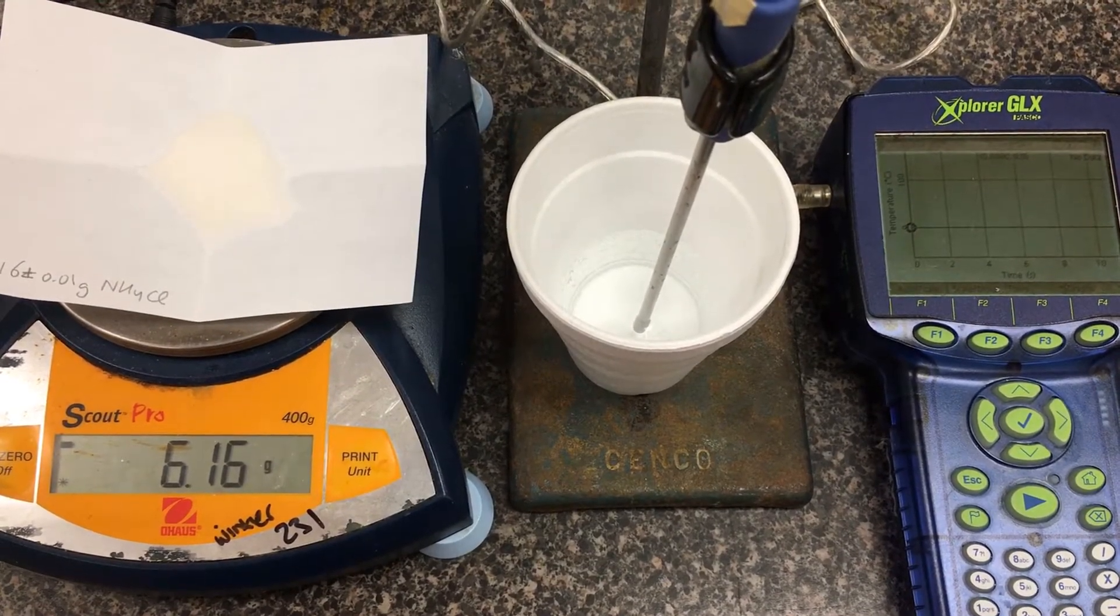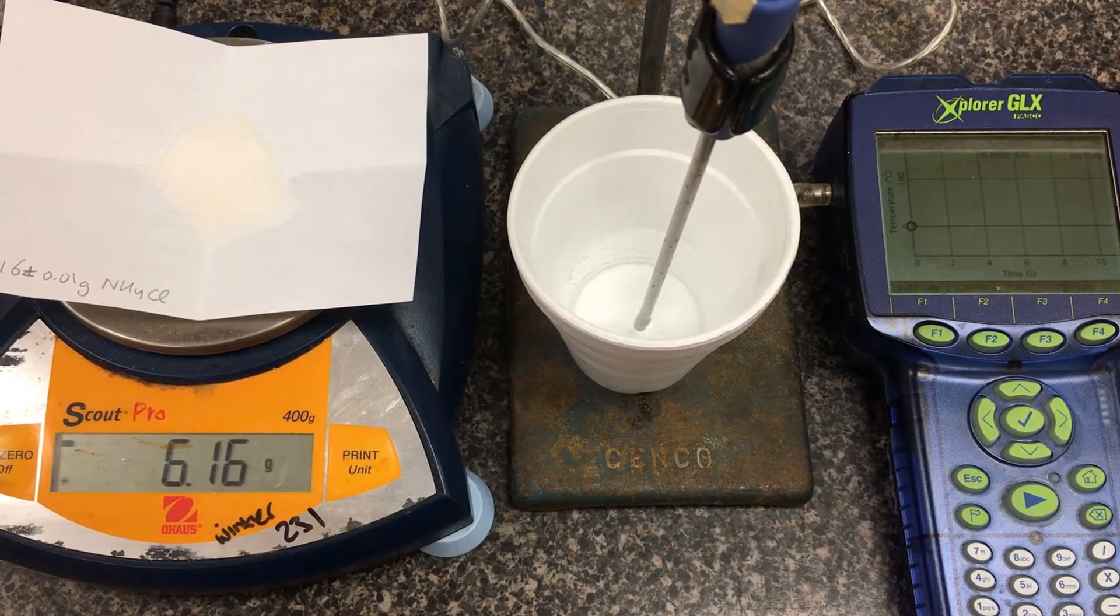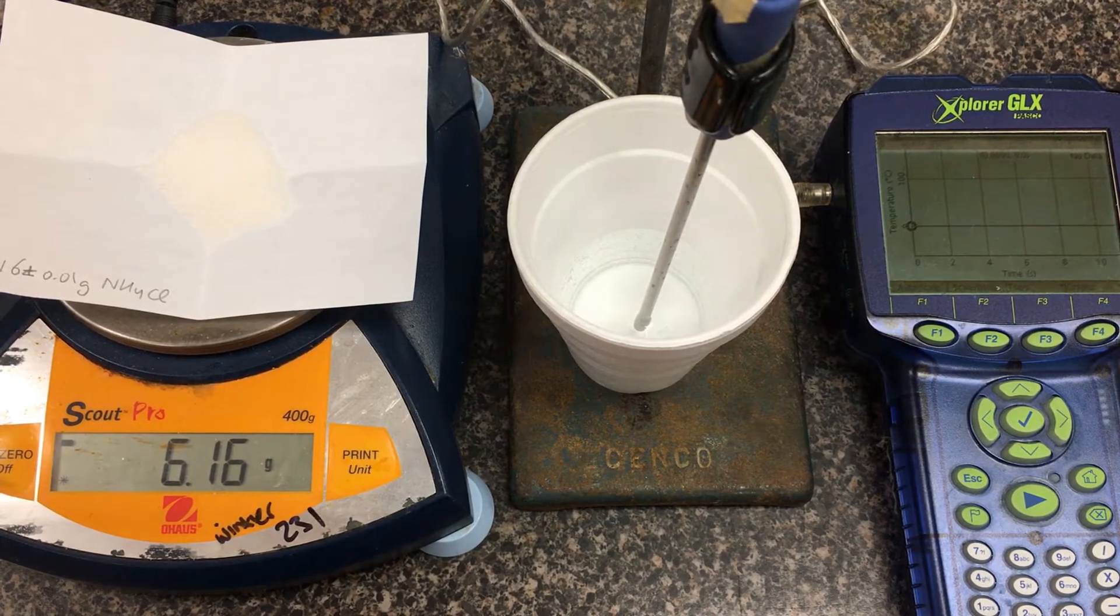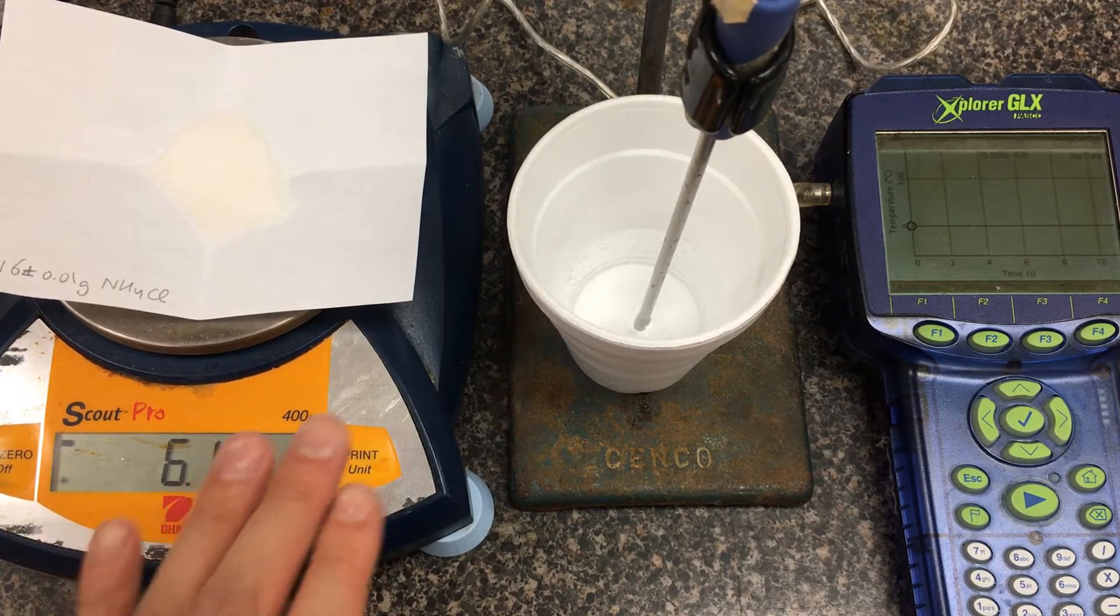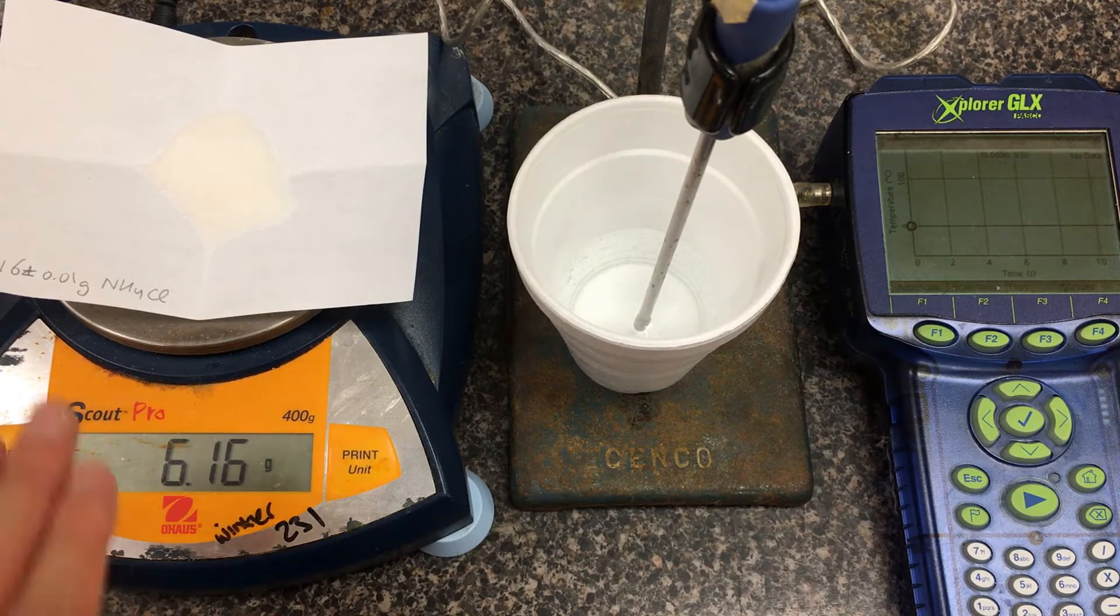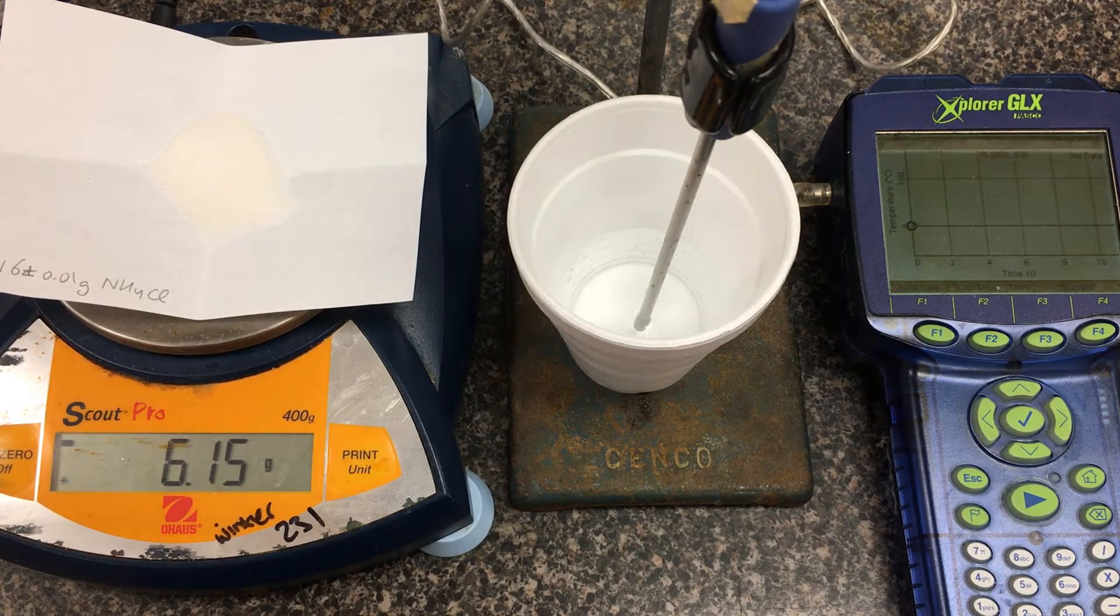In this lab, we're going to be determining the enthalpy of solution using a calorimetry experiment. The salt we're examining is ammonium chloride. I've already removed the mass of the paper, so this is 6.16 grams of the powder plus or minus 0.01 gram.